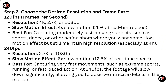Step 3: Choose the desired resolution and frame rate. At 120 fps, the available resolutions are 4K, 2.7K, or 1080p, giving a 4x slow motion effect at 25% of real time speed. This is best for capturing moderately fast moving subjects such as sports, dance, or other action shots where you want some slow motion effect but still maintain high resolution, especially at 4K.